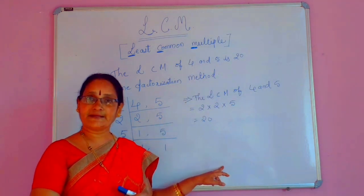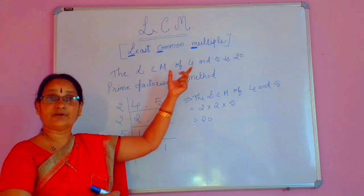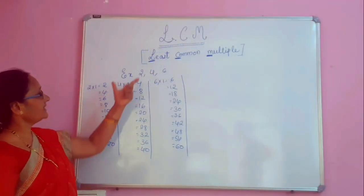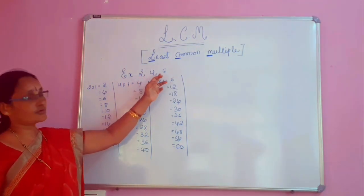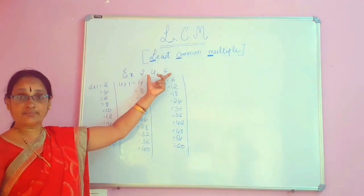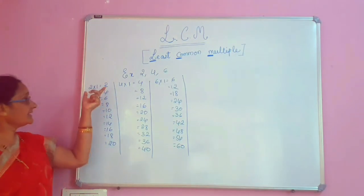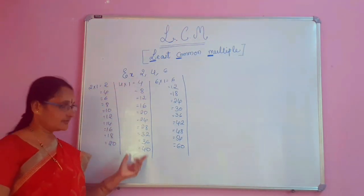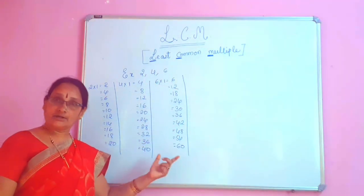LCM is same — this is what finding out the LCM of given numbers. My dear students, let me explain the LCM of 3 numbers. Example: 2, 4, 6 — three numbers. LCM. Now we find out by listing out the multiples. Write the multiples of 2, write the multiples of 4, then write the multiples of 6 like this.